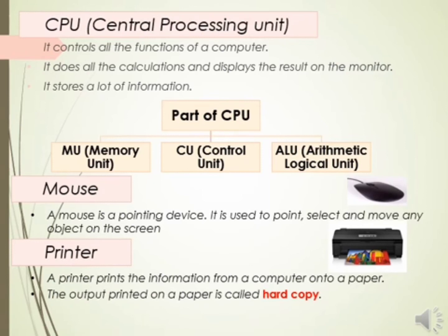A CPU is made up of three parts. The first is the Memory Unit. In this unit we can store information or data according to need. The information in the memory unit can be changed when needed.